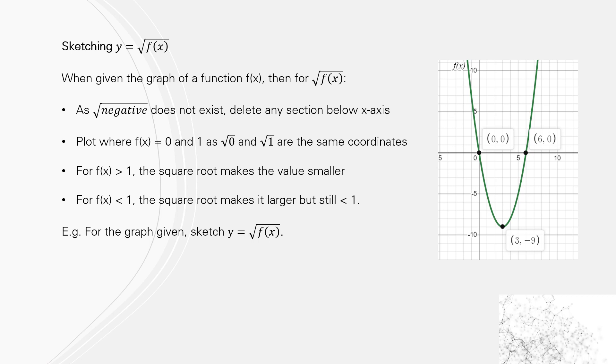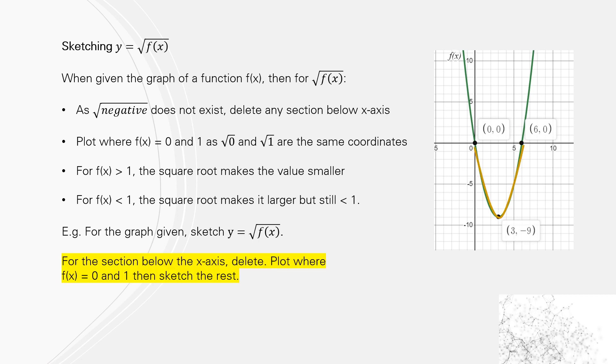So here's an example. We've used this in the last video. This is x times (x minus 6), and we're going to take the square root of that function. For the section below the x-axis, we're going to delete so it won't exist.